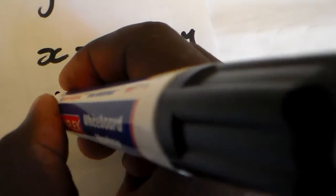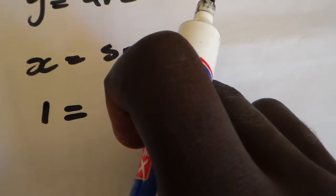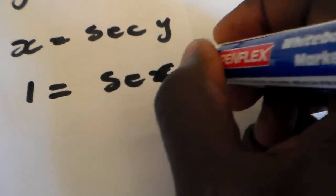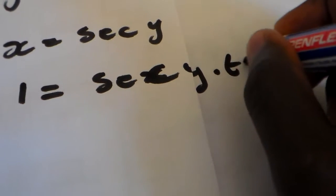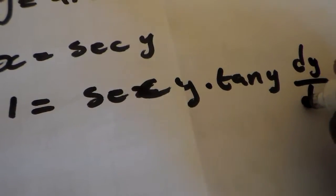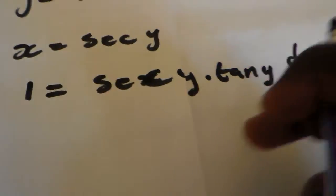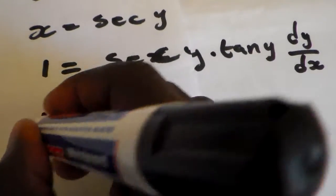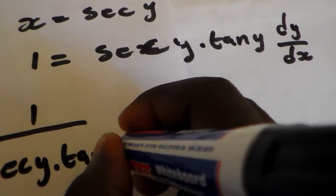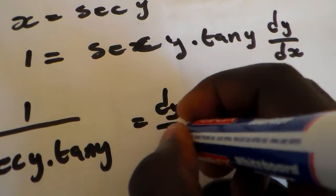Then we derive both sides. If we derive both sides, we get 1 on the left, and the derivative of arc sec y gives us sec y multiplied by tan y, then dy over dx. Therefore, we divide both sides, so we get 1 over sec y multiplied by tan y, which is equal to dy over dx.